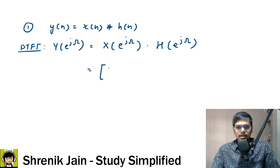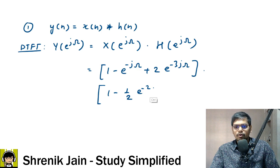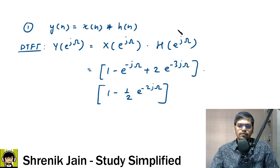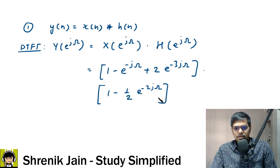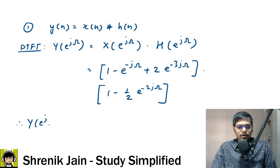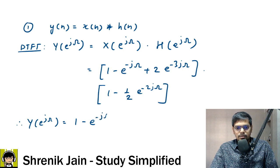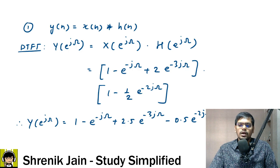After expanding and combining terms, we get Y(e^jω) = 1 − e^(−jω) − 0.5e^(−2jω) + 2.5e^(−3jω) − e^(−j5ω). They need the output in the time domain, so we convert to Z-transform by replacing e^(−jω) with z^(−1): Y(z) = 1 − z^(−1) − 0.5z^(−2) + 2.5z^(−3) − z^(−5).